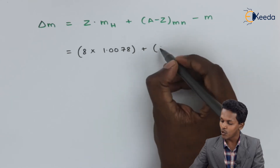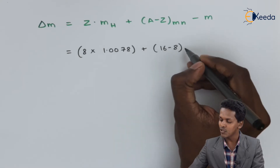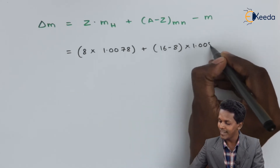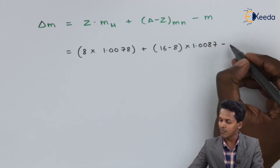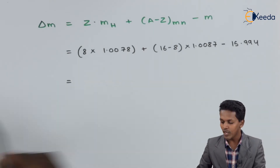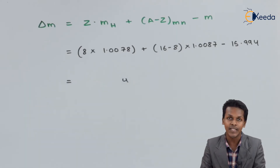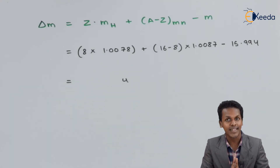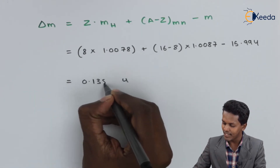Continuing the substitution: (A minus Z) is 16 minus 8, which is 8, multiplied by the mass of the neutron, 1.0087 unified mass units, minus the observed mass of oxygen, 15.994 unified mass units. Calculating this gives us a mass defect of 0.138 u.